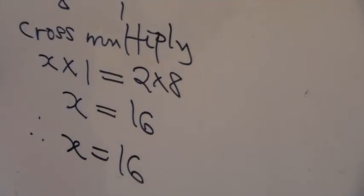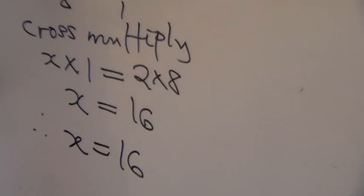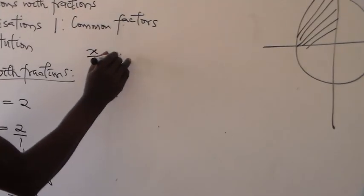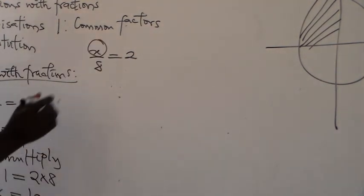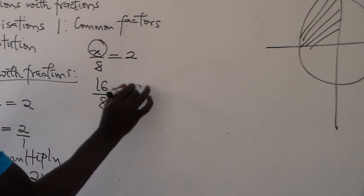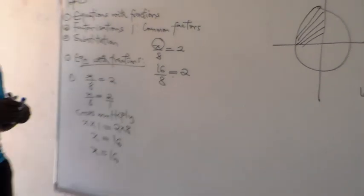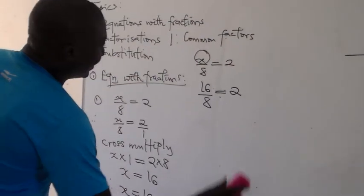You can test your answer to be sure that what you have done is correct by returning to the given equation: x over 8 equals 2. We solved x to be 16. When we say 16 divided by 8, the result is equal to 2. This clearly explains that this is truly an equation, because what is on the left-hand side is the same as what is on the right-hand side.